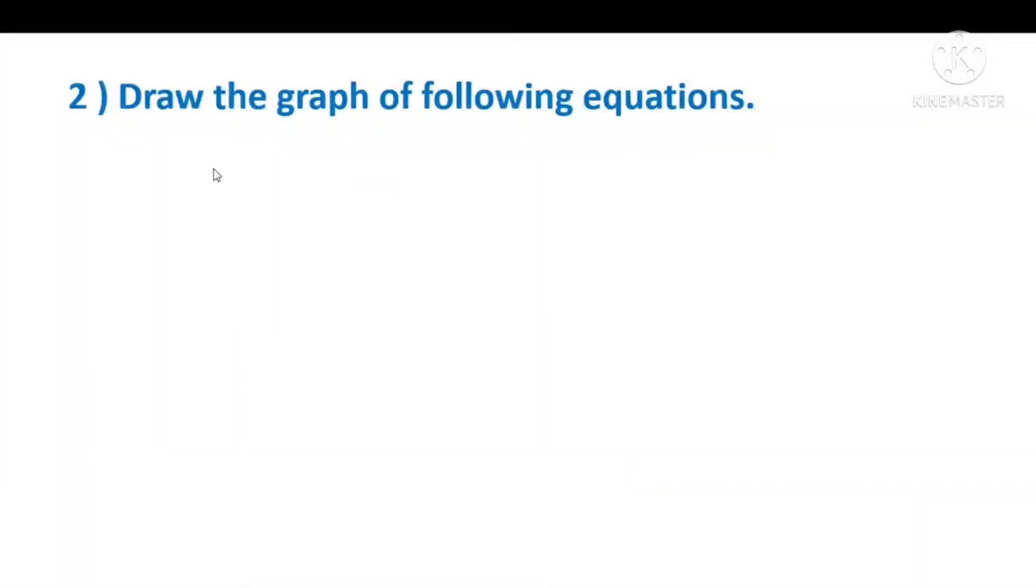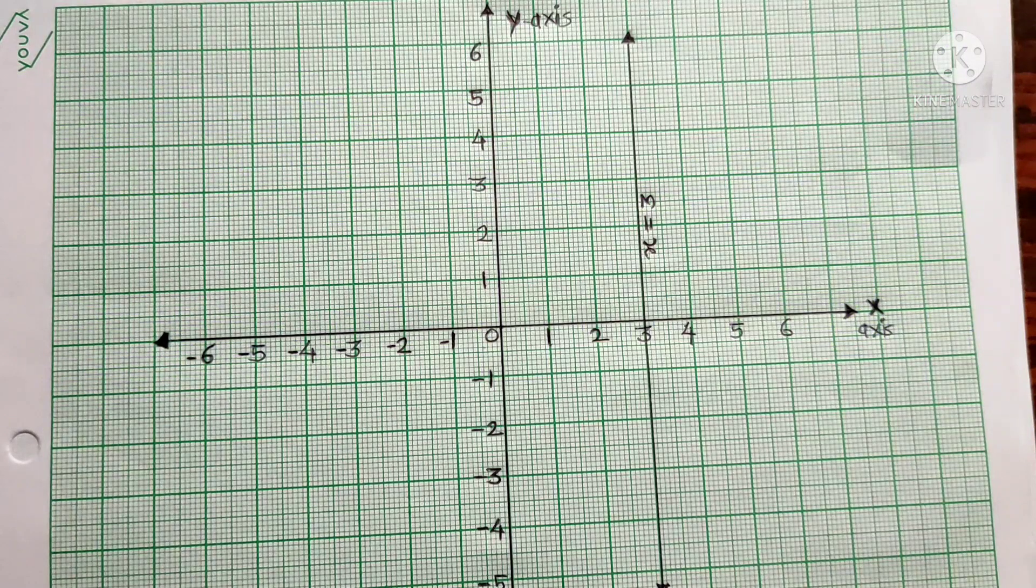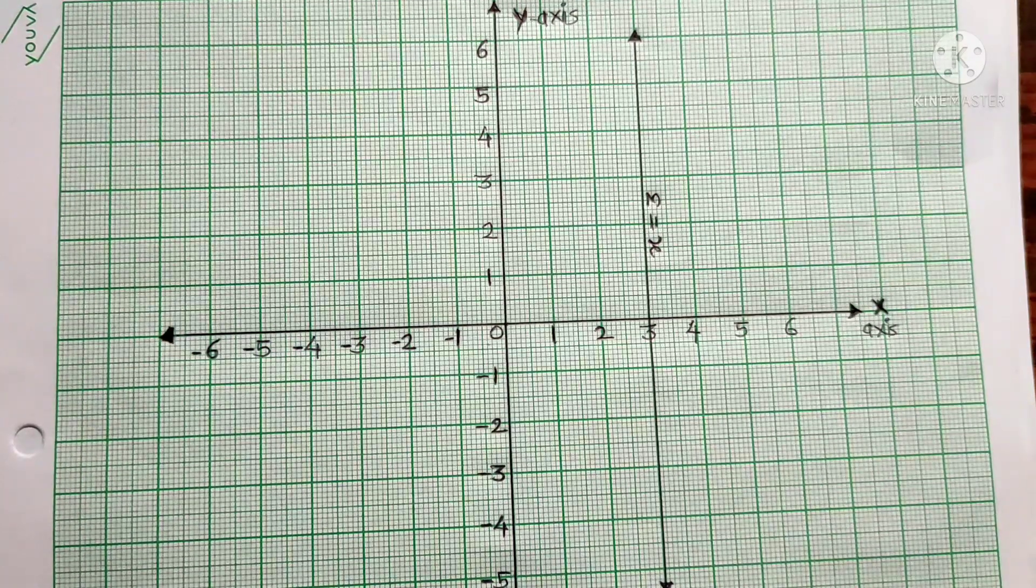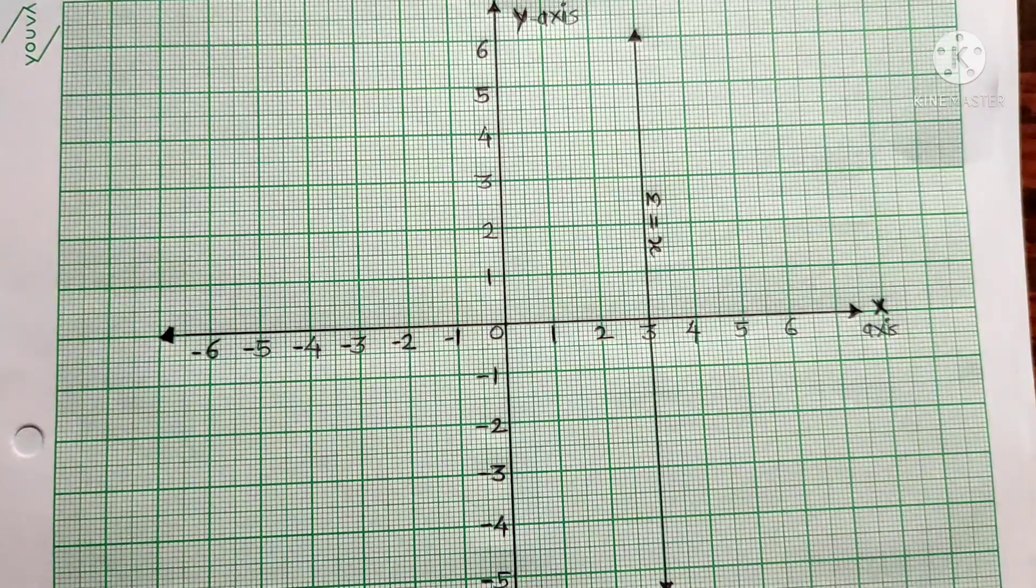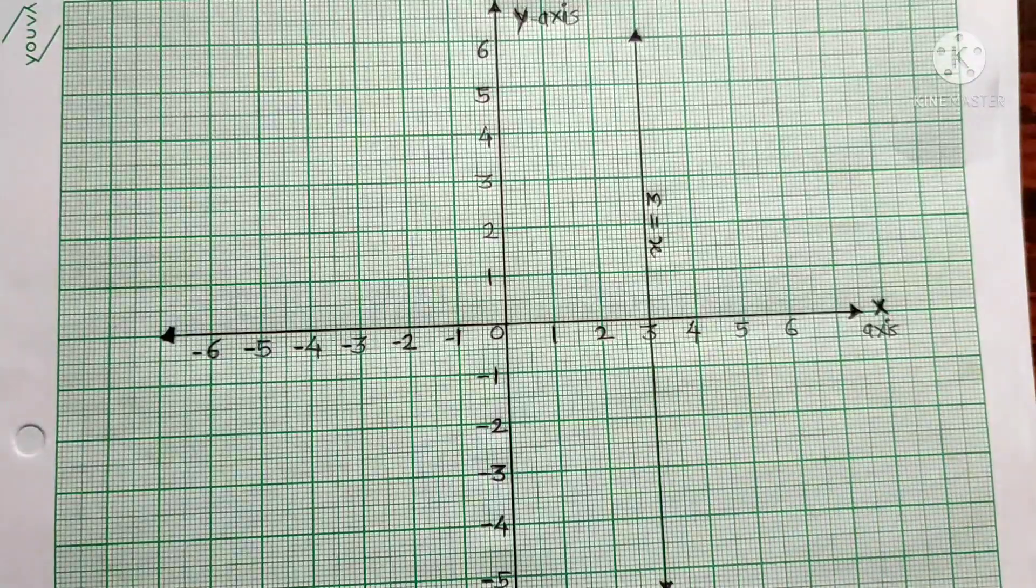Question 3: Draw the graph of the following equations. The equations given are x is equal to 3 and y is equal to minus 5. We'll draw this on graph paper. First, draw the x-axis and y-axis with positive and negative sides marked, with 0 at center.